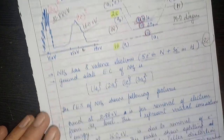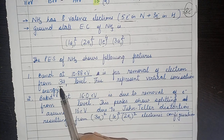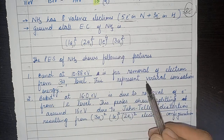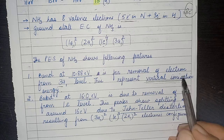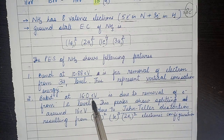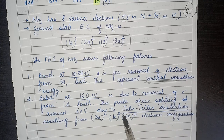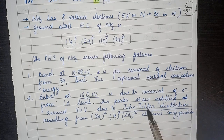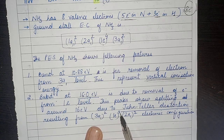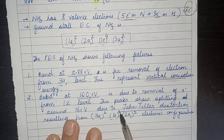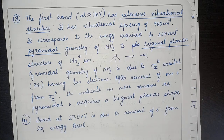So to summarize: the band at 10.88 eV is due to removal of an electron from the 3a1 level, which represents the vertical ionization energy. The second band at 16.0 eV is due to removal of an electron from the 1e level, and the splitting present here is due to Jahn-Teller distortion. After removal of one electron from 1e, the configuration becomes: 3a1² 1e³, with 2a1 and 1a1 levels below.